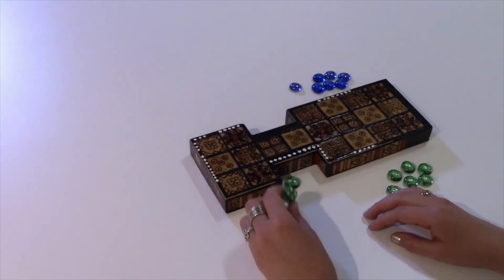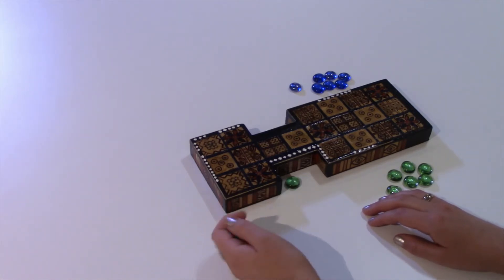To determine who goes first, each player rolls a die and whoever rolls higher starts. To move your game piece, roll the die.